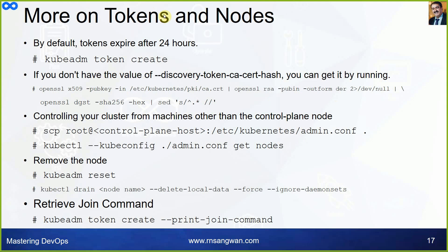More on tokens and nodes: by default a token expires after 24 hours, so you can create a new one with 'kubeadm token create'. If you don't have the value of the discovery token certificate hash, you can get it by running specific commands. You can also control your cluster from a machine other than the control plane.